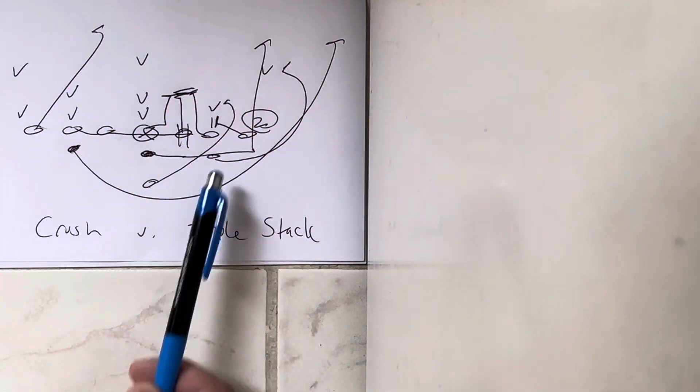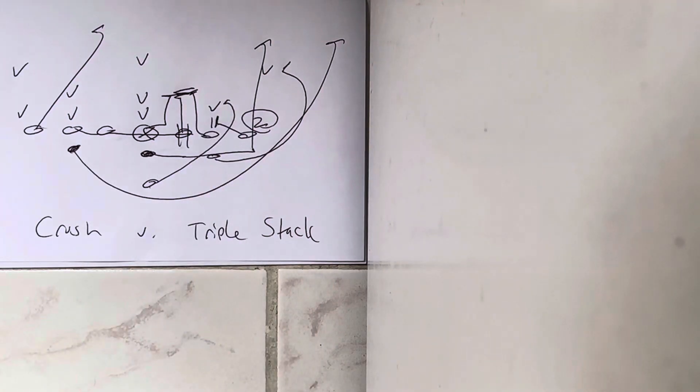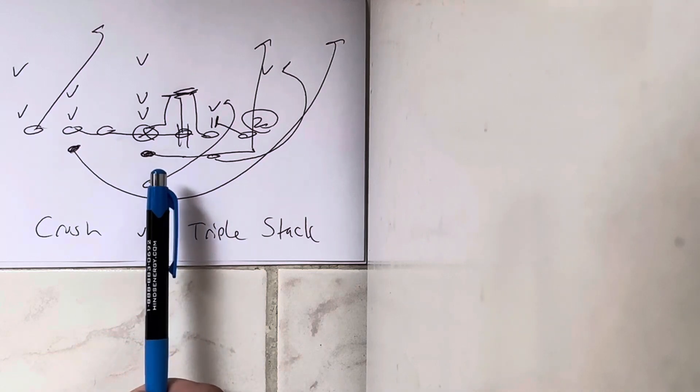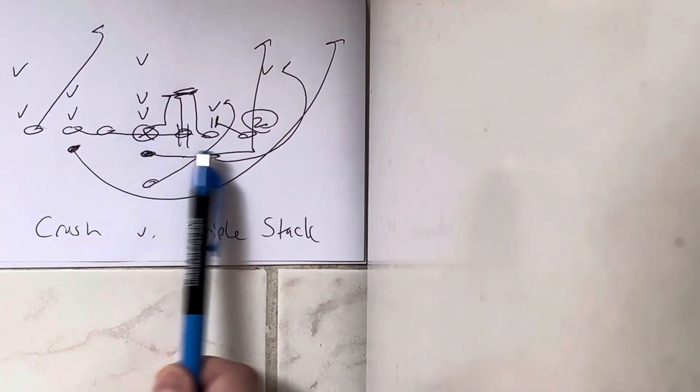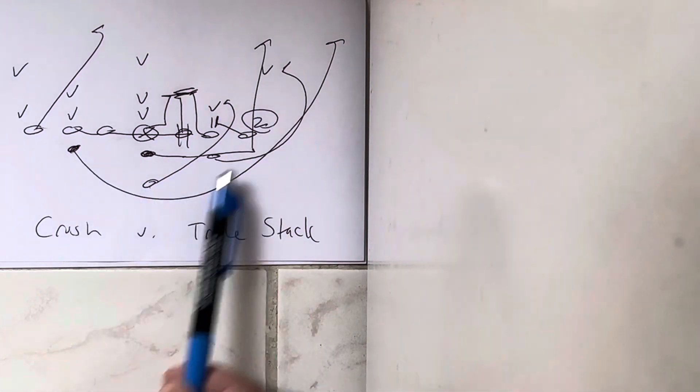He's going to block the Mike. Really he's going to work at a 45 and let the Mike come to him. Quarterback's taking the snap, jump to the play side A-gap, and then he's going to go down the line, turn up, and score off the receiver's block.